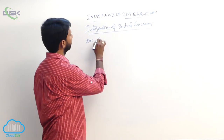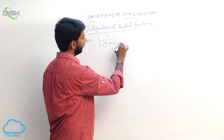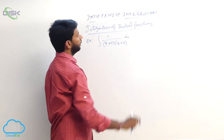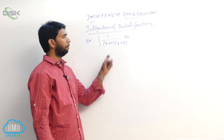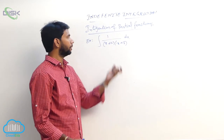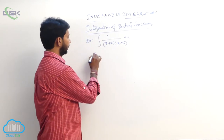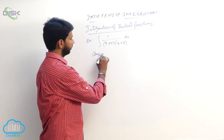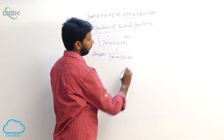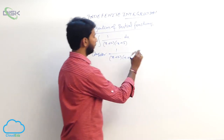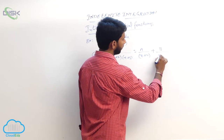Example: integral of 1/((x+2)(x+3)) dx. First, resolve 1/((x+2)(x+3)) into partial fractions: write it as A/(x+2) plus B/(x+3).